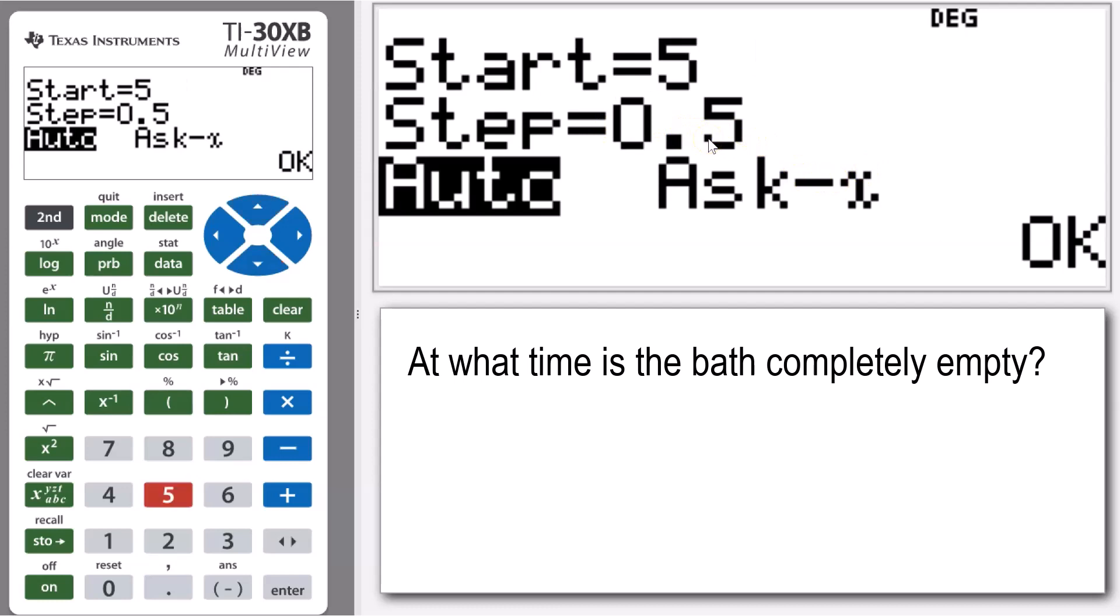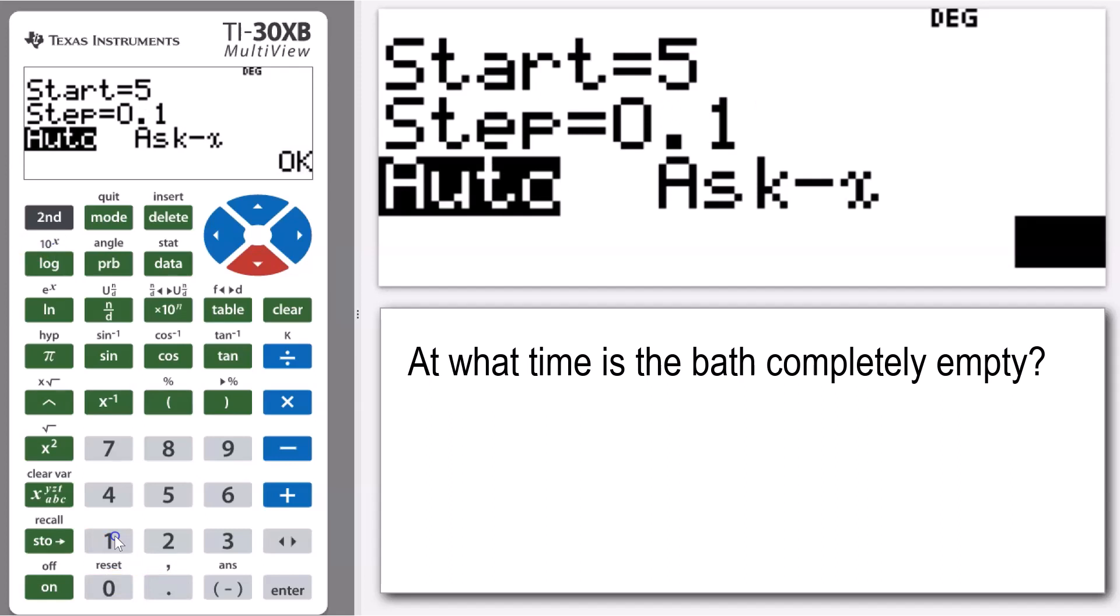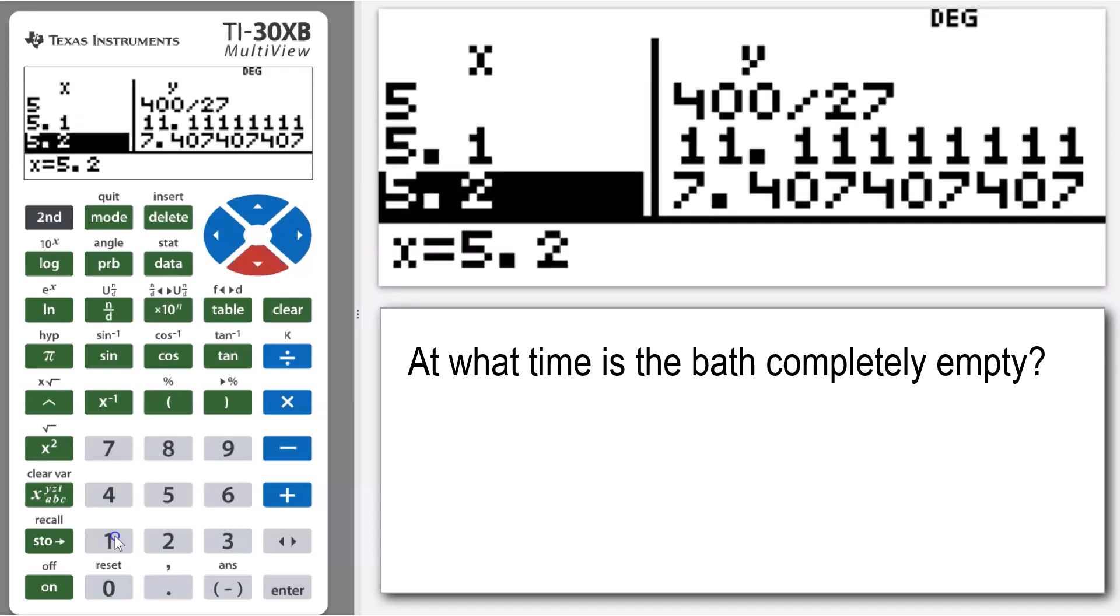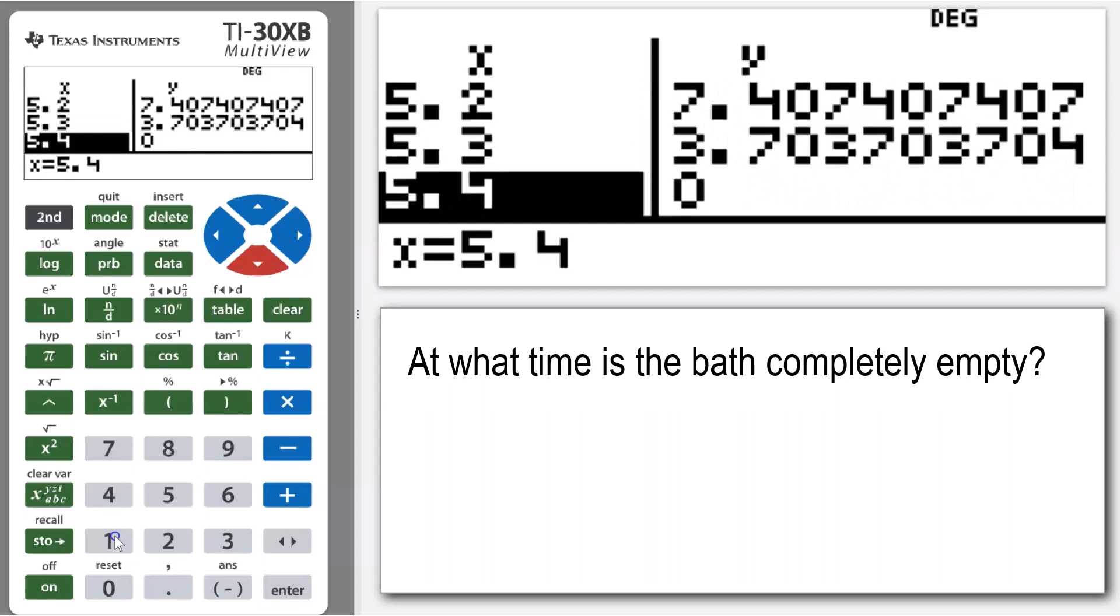So I'm going to decrease this again, and I want to start it now at five minutes, because again I know it's sometime between five and five and a half that I'm interested in. So if I started at five, I'm going to bring my step down to 0.1, and I'm going to go okay again. So now this is going to give me 0.1 increments in my table, so I can see there, five, 5.1, 5.2, 5.3, and we can see at 5.4 minutes that then becomes zero. So that's the point where our bath is empty.